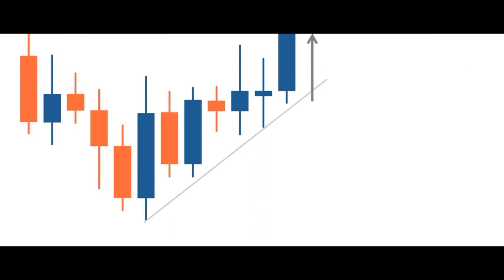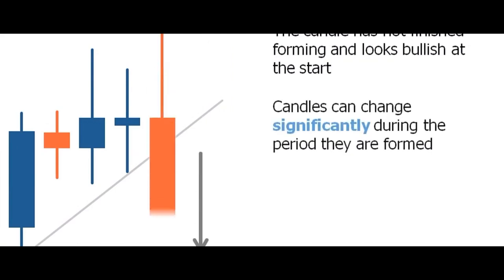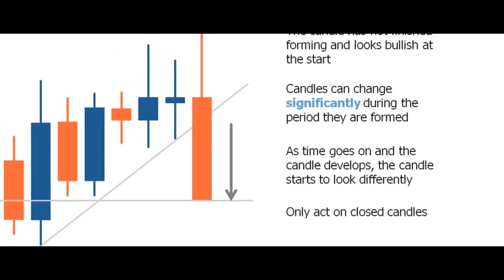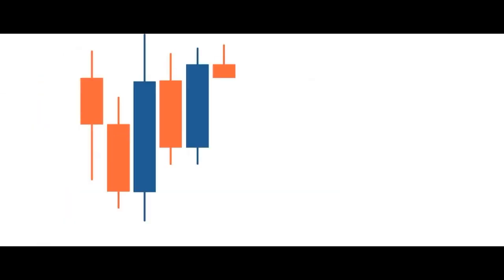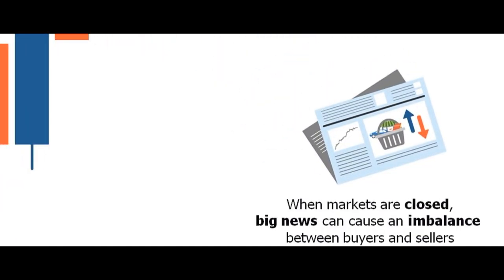A lot can happen during the period in which a candle forms, and the balance in power can shift from one side to the other. At the beginning of the candle formation it could be that the bulls are more in control, but during the formation of the candle, sellers could come into the market and change the sentiment significantly. What may start out as a bullish candle could end up as a bearish candle. This means you should only ever base a decision on a closed candle. On occasion, when the markets are closed and big news comes out, it can cause an imbalance between buyers and sellers, noted on a price chart by a gap in price when the market opens again.